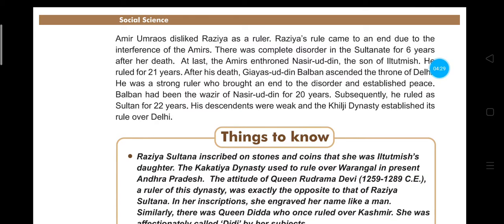There was complete disorder in the Sultanate for six years after Rajya's death. At last, the Ameers enthroned Nasiruddin, the son of Iltutmish, who ruled for 21 years. The Ameers were the nobles and court officials who held significant power in the administration.